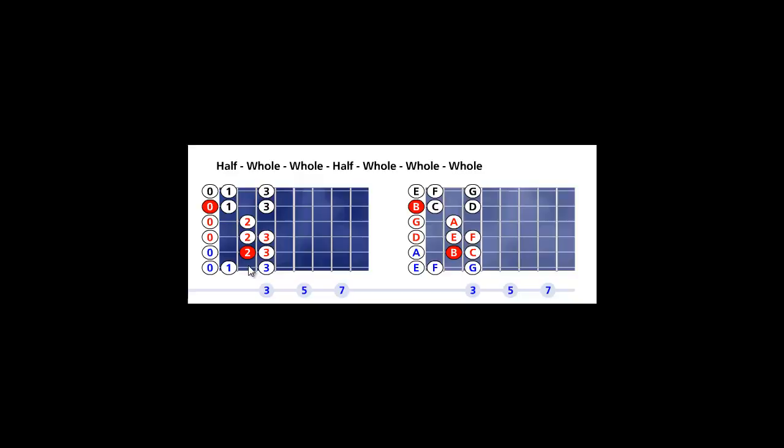Start playing the pattern with the open E on sixth string. Walk up the steps until you play the G on first string third fret. Now go back descending until you play the open E on sixth string. You just made a complete pass.